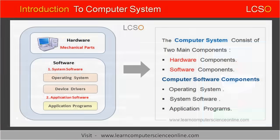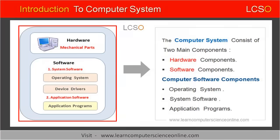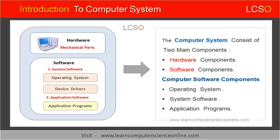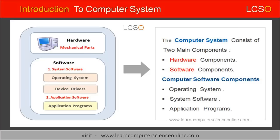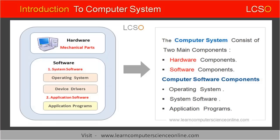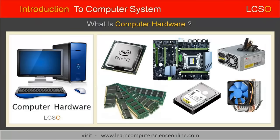The computer system mainly consists of two types of components. The first type is called the hardware components, and the second type is called the software components. The hardware components are the physical parts of the computer, such as keyboard, display monitor, mouse, CPU cabinet, and other such parts.